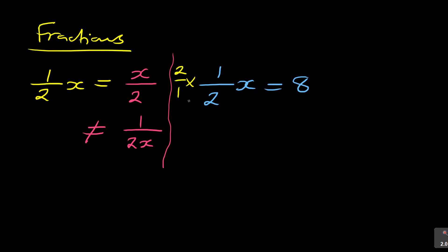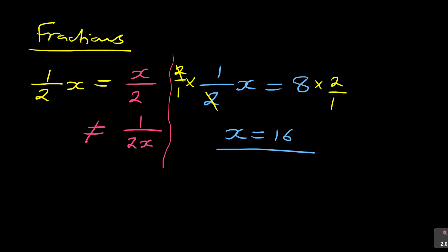What you do on the left you do on the right — multiply by 2/1. The fraction cancels, and you now have x = 8 × 2, which gives us 16. That is method number one.